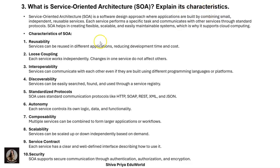The next question is: what is Service-Oriented Architecture (SOA)? Explain its characteristics. Service-oriented architecture is a software design approach where applications are built by combining small, independent, reusable services. Each service performs a specific task and communicates with other services through standard protocols. SOA helps in creating flexible, scalable, and easily maintainable systems, which is why it supports cloud computing.